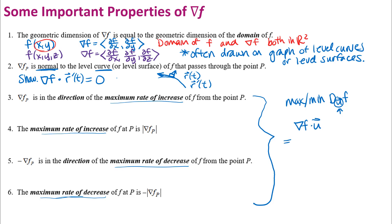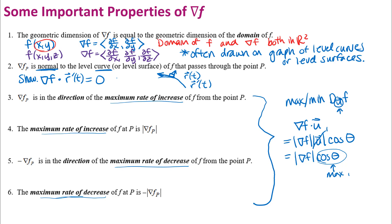The geometric definition of a dot product is the magnitude of one vector times the magnitude of the other vector times the cosine of the angle between them. Since u is a unit vector, its magnitude is one, so we get the magnitude of the gradient vector times cosine theta. This is maximized when cosine theta equals one, which occurs when the angle between the two vectors is zero — meaning we travel in the direction of the gradient vector, so u and the gradient are in the same direction. The gradient vector points in the direction of maximum rate of increase, and the maximum rate of increase equals the magnitude of the gradient vector.